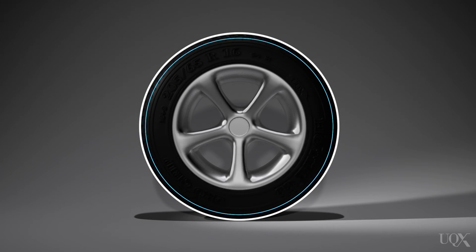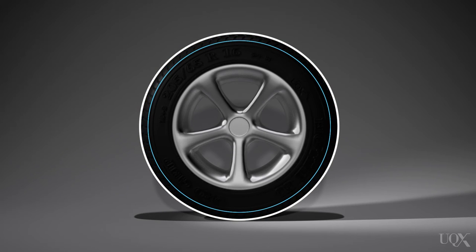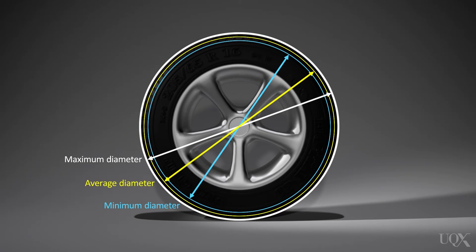As the tread depth changes over the life of the tyre, we can use the terms maximum diameter and minimum diameter to refer to the two extremes. Since the diameter is not constant, it is appropriate to use the average tyre diameter.